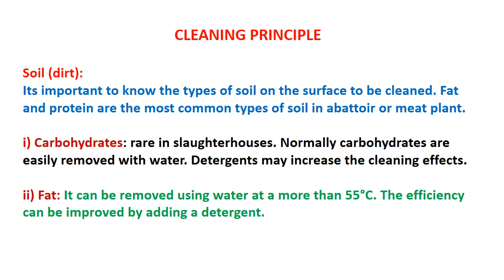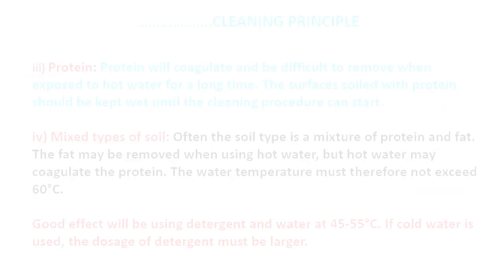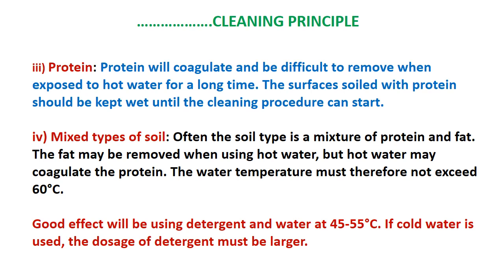Carbohydrates are easily removed with water; detergents may increase the cleaning effect. Fat can be removed using water at more than 55°C. Efficiency can be improved by adding a detergent, which helps in detaching the fat by emulsification. Protein is the most common soil in abattoir or meat plant next to fat. Protein will coagulate and become difficult to remove when exposed to hot water for a long time.